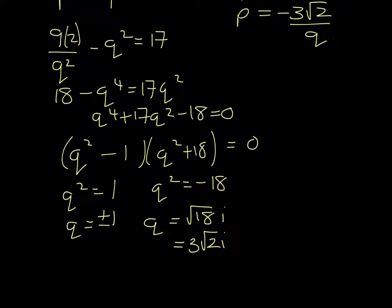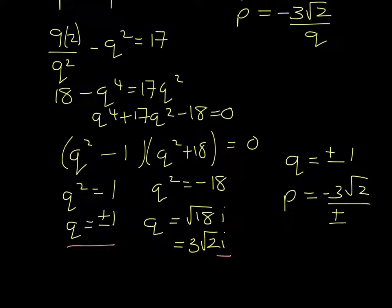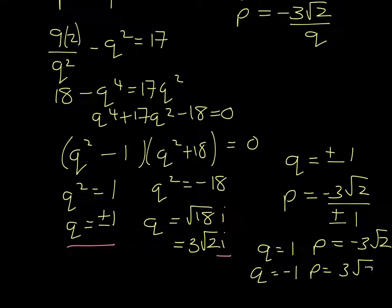q is going to have to take the values plus or minus 1. If we let it take i, then we're going to have an i squared, and then that term becomes real. So if q equals plus or minus 1, then p is minus 3 root 2 divided by plus or minus 1. So that means when q is 1, p is minus 3 root 2, and when q is minus 1, p is 3 root 2.